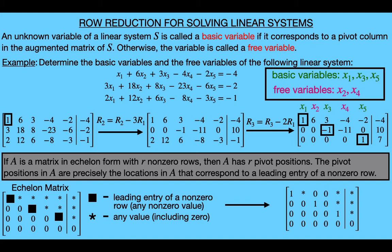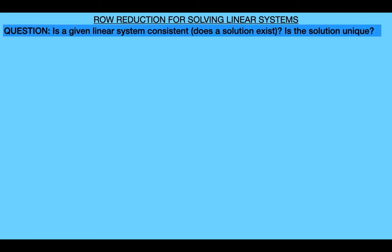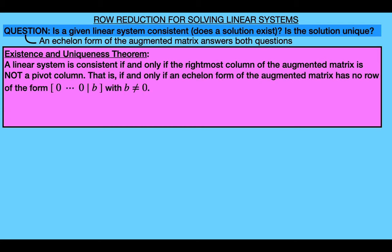Now that we've seen an example, let's discuss why basic and free variables are important to the study of linear systems. Recall from earlier videos in this series that we had two big questions regarding linear systems. The first question was whether the system was consistent, meaning it has at least one solution, and if so, whether the solution was unique. Well, with the use of basic and free variables, we're able to answer both of these questions by looking at an echelon form of the augmented matrix of the system. The following existence and uniqueness theorem illustrates this point. The existence part of the theorem says that a linear system is consistent if and only if the rightmost column of the augmented matrix is not a pivot column. Equivalently, a linear system is consistent if and only if an echelon form of the augmented matrix has no row of this form for some non-zero constant b.